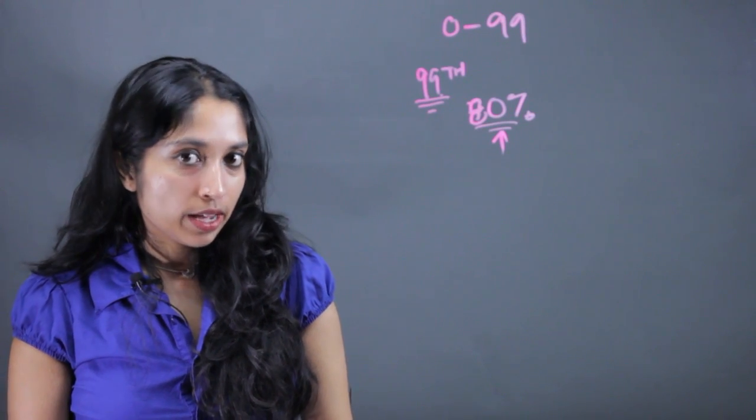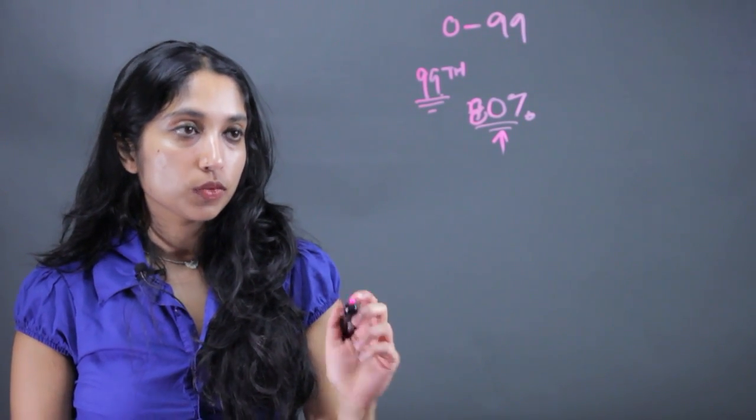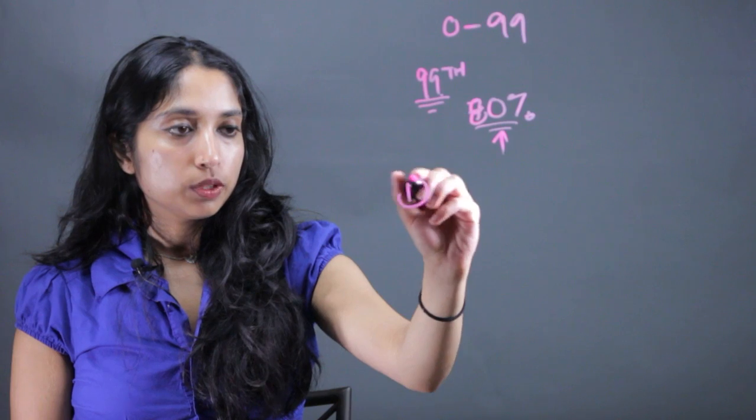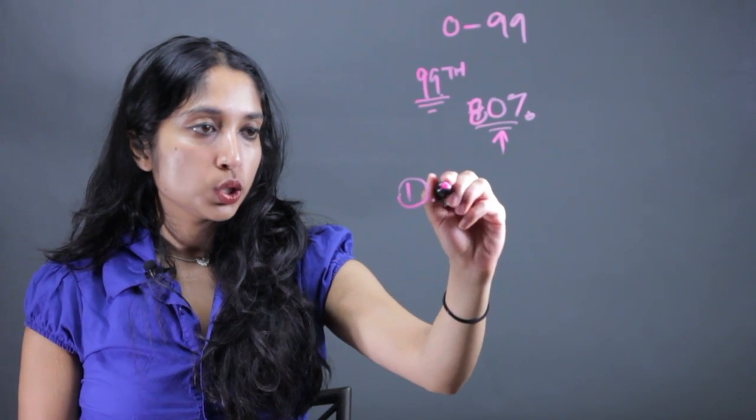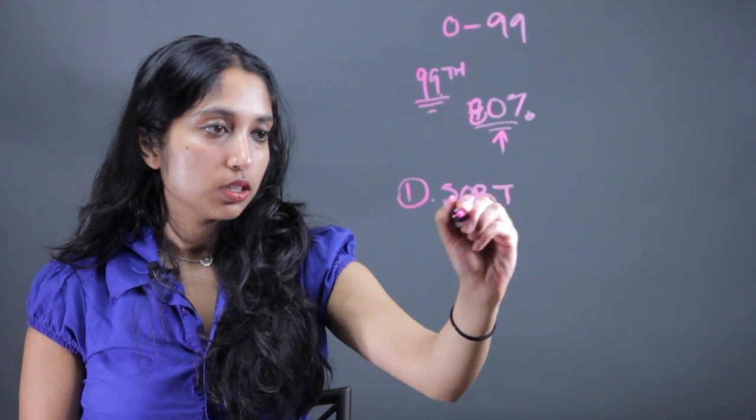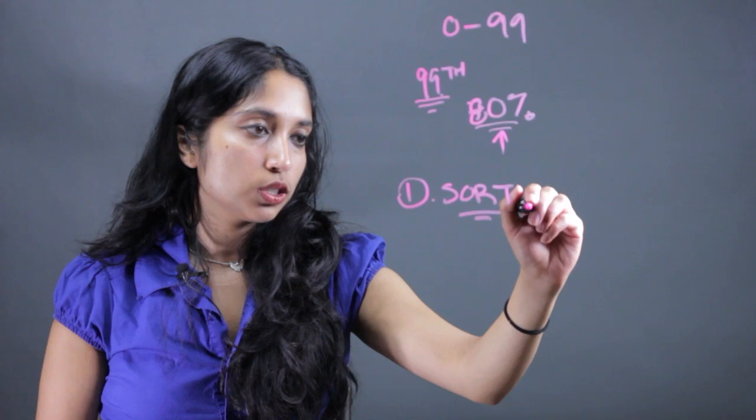Now, say we have a bunch of test scores and we're trying to find a percentile. You would do that in a couple of easy steps. The first thing you would do is sort the test from least to greatest.